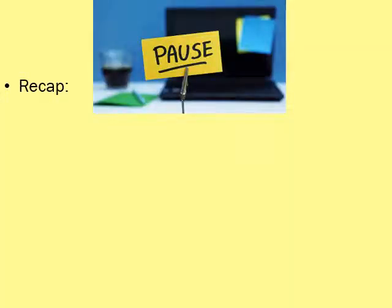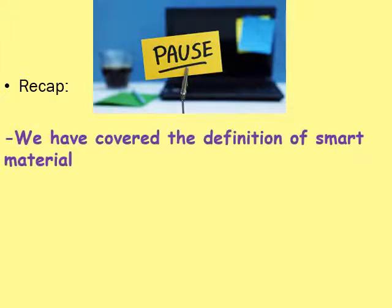What I'd like to do now is have a bit of a pause and a recap. This is where you can use your pen and paper and start having a go at a few little tasks to see what you've remembered. What we've covered is the official definition of a smart material, which you need to try and commit to memory, and I've introduced you to three different types of smart materials.